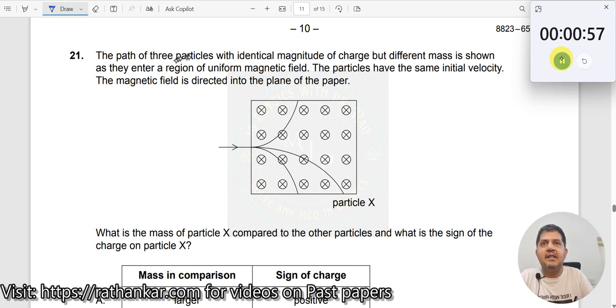Question number 21. The path of three particles with identical magnitude of charge, identical magnitude of charge which means what? The magnitude is same but he does not say it is positive charge and negative charge.